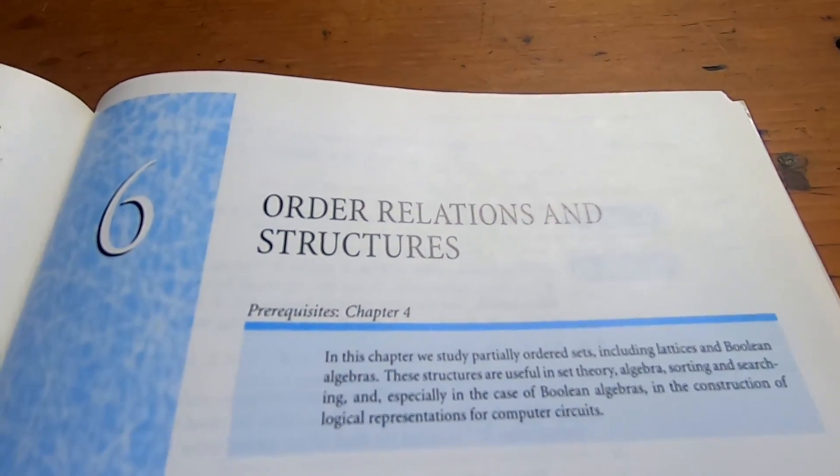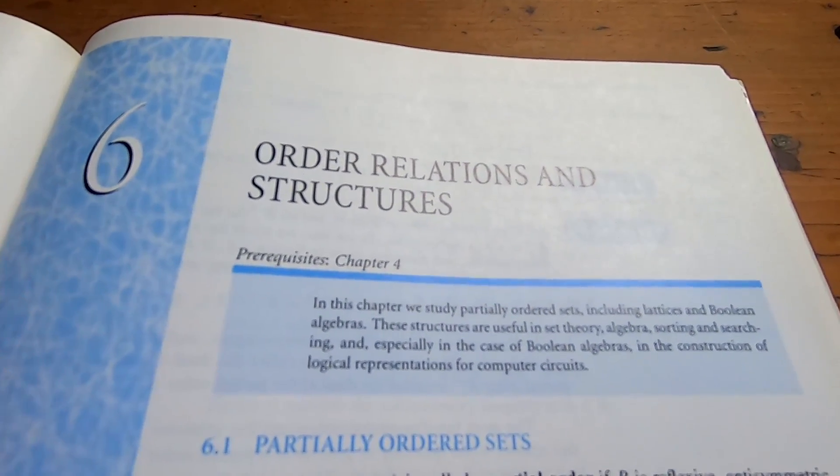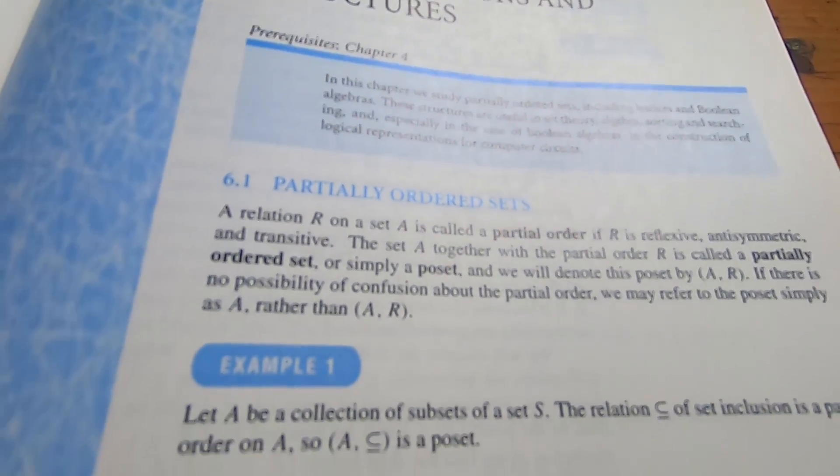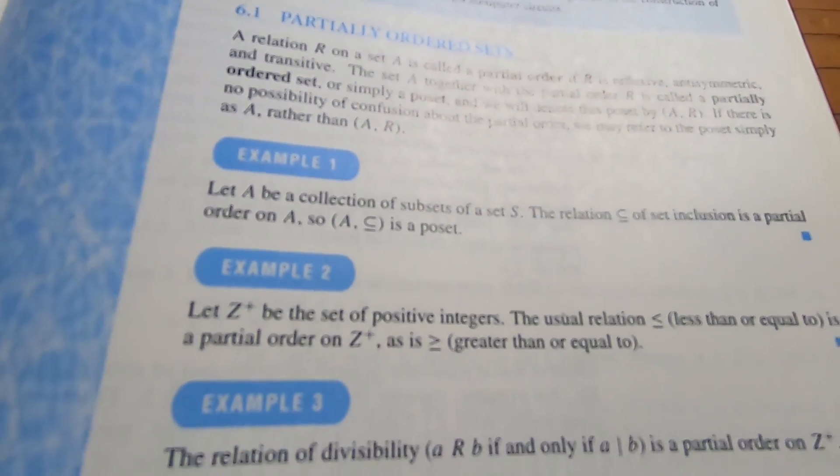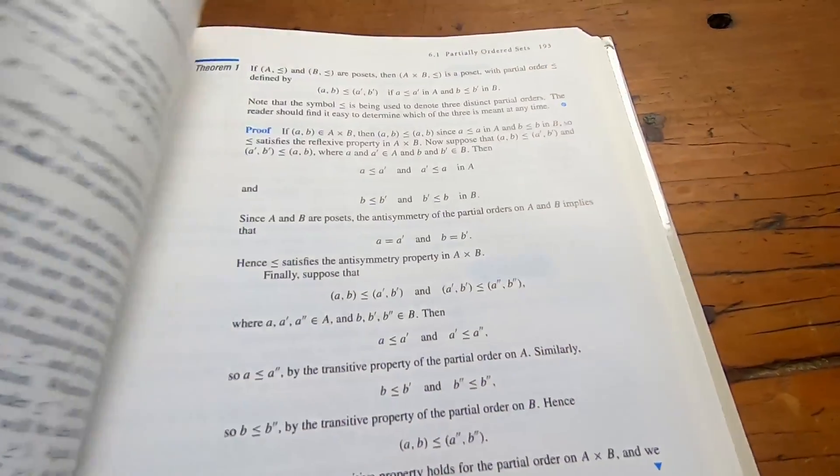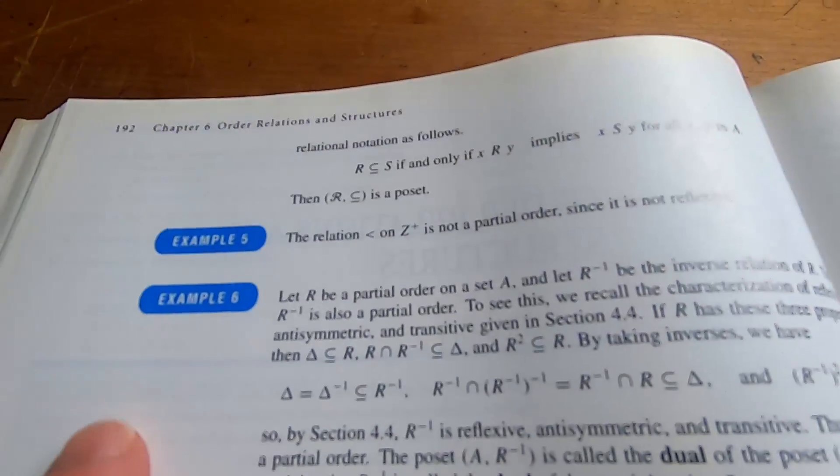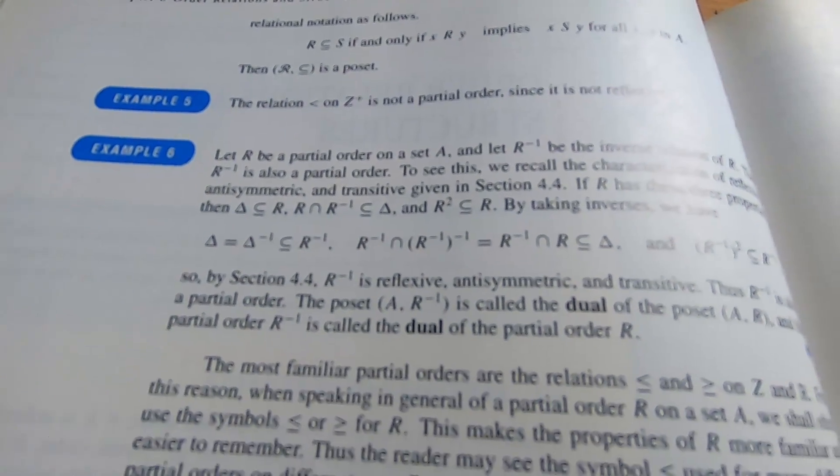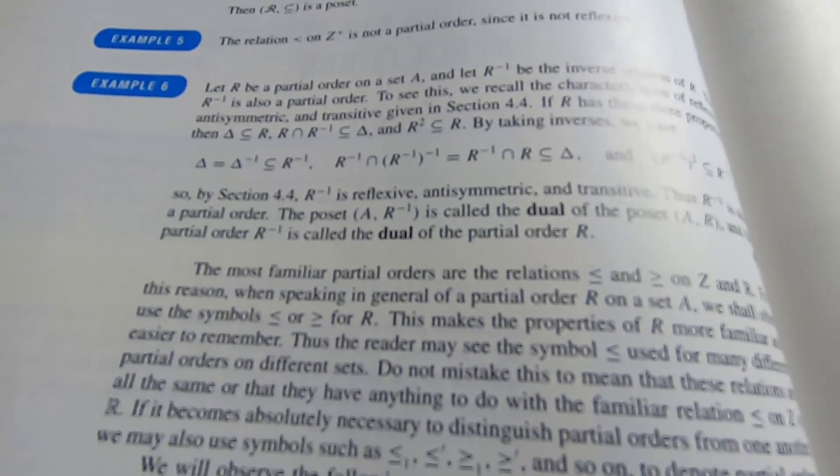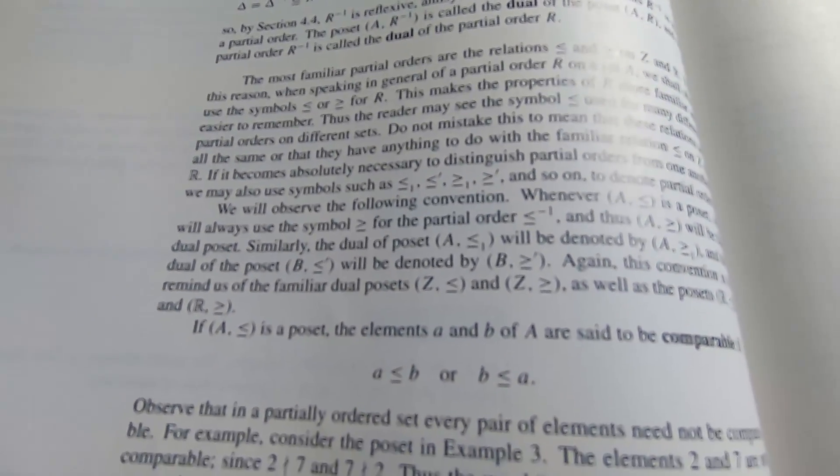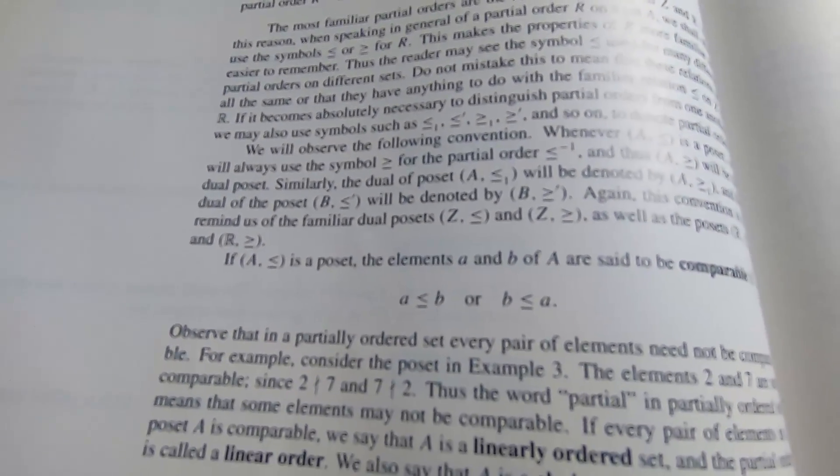The section on posets is quite good. The book does a pretty good job of explaining what a partially ordered set is. And then it goes on to give several examples. Let me turn the page here so you can see some of the math. So yeah, they do a pretty good job explaining and that's really the benefit of this book is that it's a little bit easier to read than a lot of the other discrete math books.